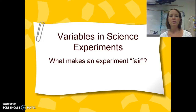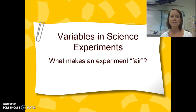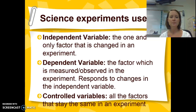In today's module, we're going to be looking at what the different types of variables are in science experiments and what we can do to ensure that our experiments we design are fair. The three types of variables are independent, dependent, and controlled.